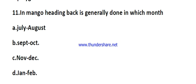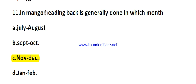Question number eleven: heading back in mango is generally done in which month? The options are July, August, September, October, November, December, January, and February. The right answer is November-December. However, if the question asks about pruning in mango, the answer is August-September.